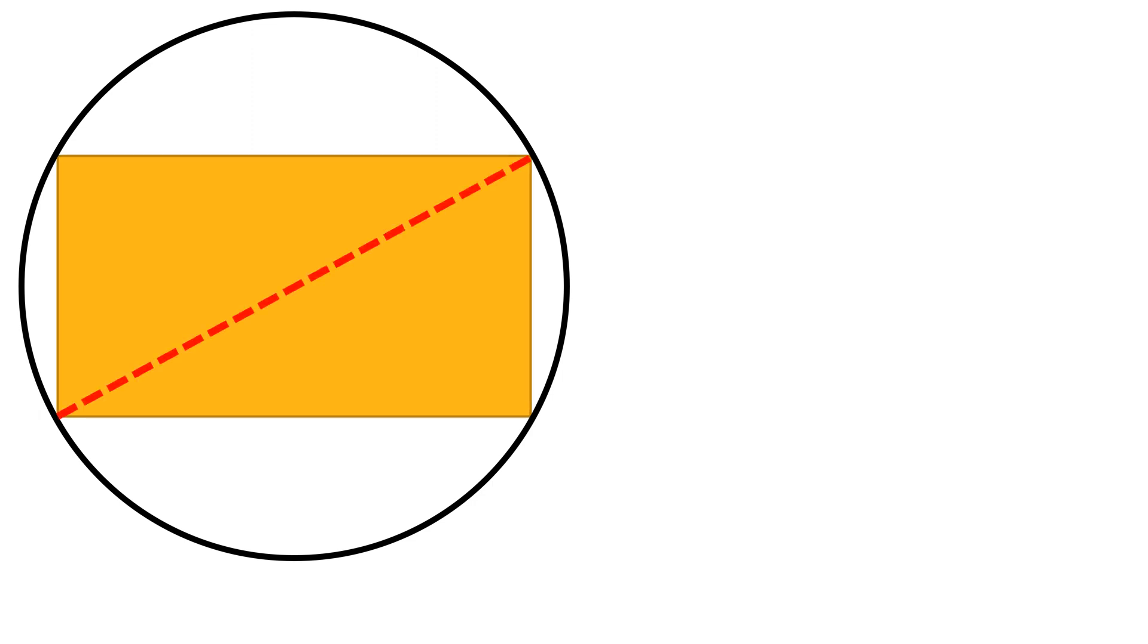The criteria that you can use is the diagonal length of the rectangle equals the diameter of the circle, or the half diagonal length is less than or equal to the radius of the circle.